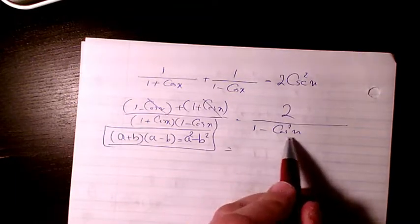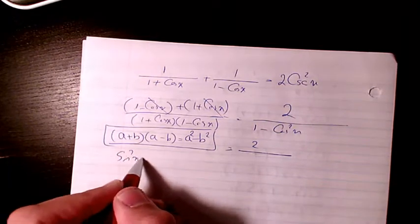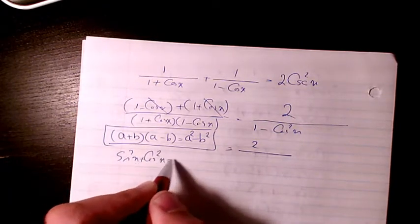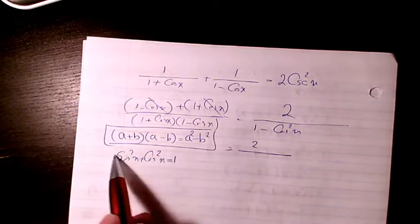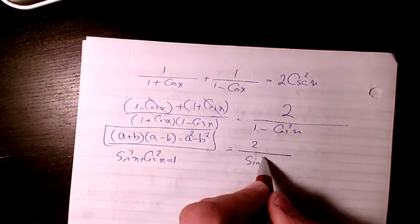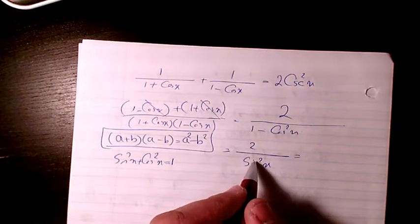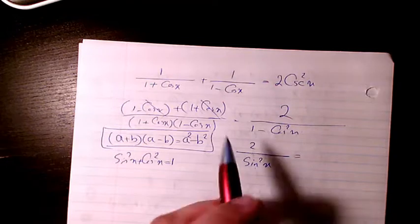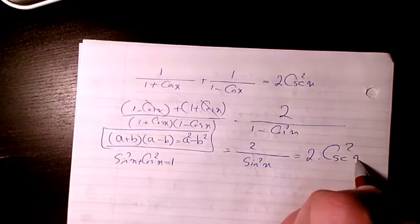2 divided by 1 minus cosine squared x and as we know because sine squared x plus cosine squared x equals to 1 so 1 minus cosine squared x will be equal to sine squared x and sine is the inverse of cosecant and cosecant is the inverse of sine so that's why we have 2 times cosecant squared x.